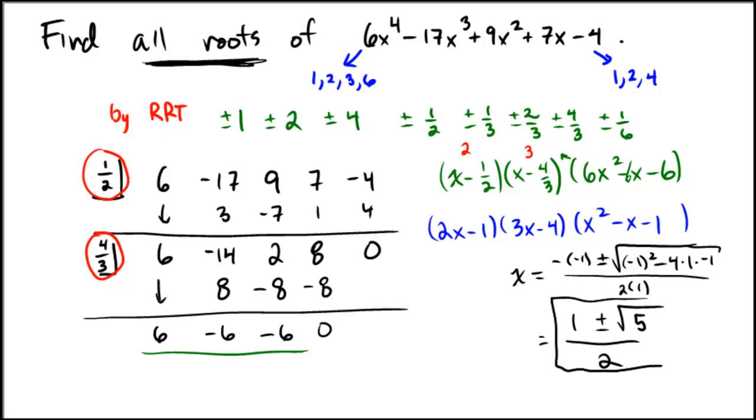So your four solutions are 1 plus or minus radical 5 over 2, 1 half and 4 thirds.